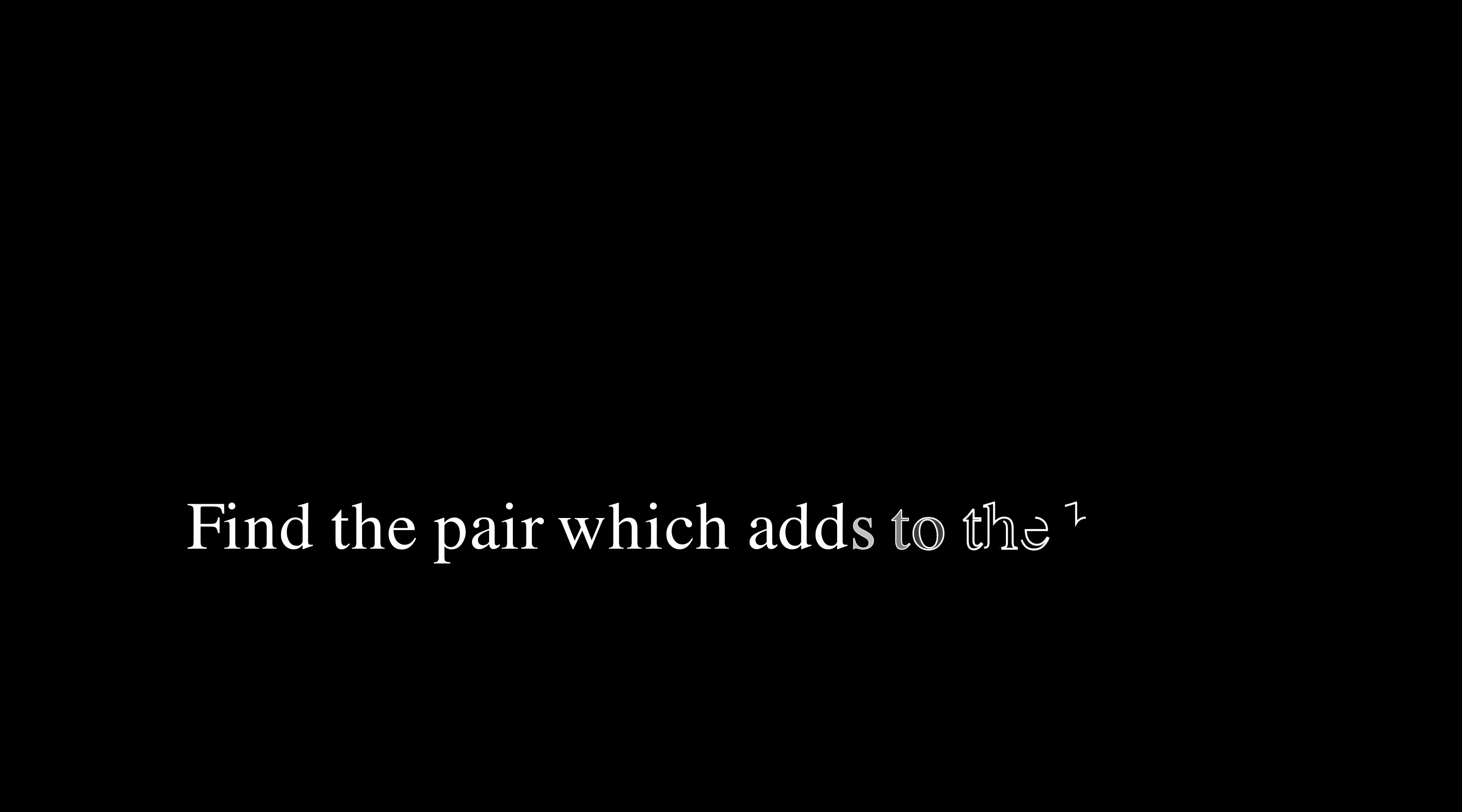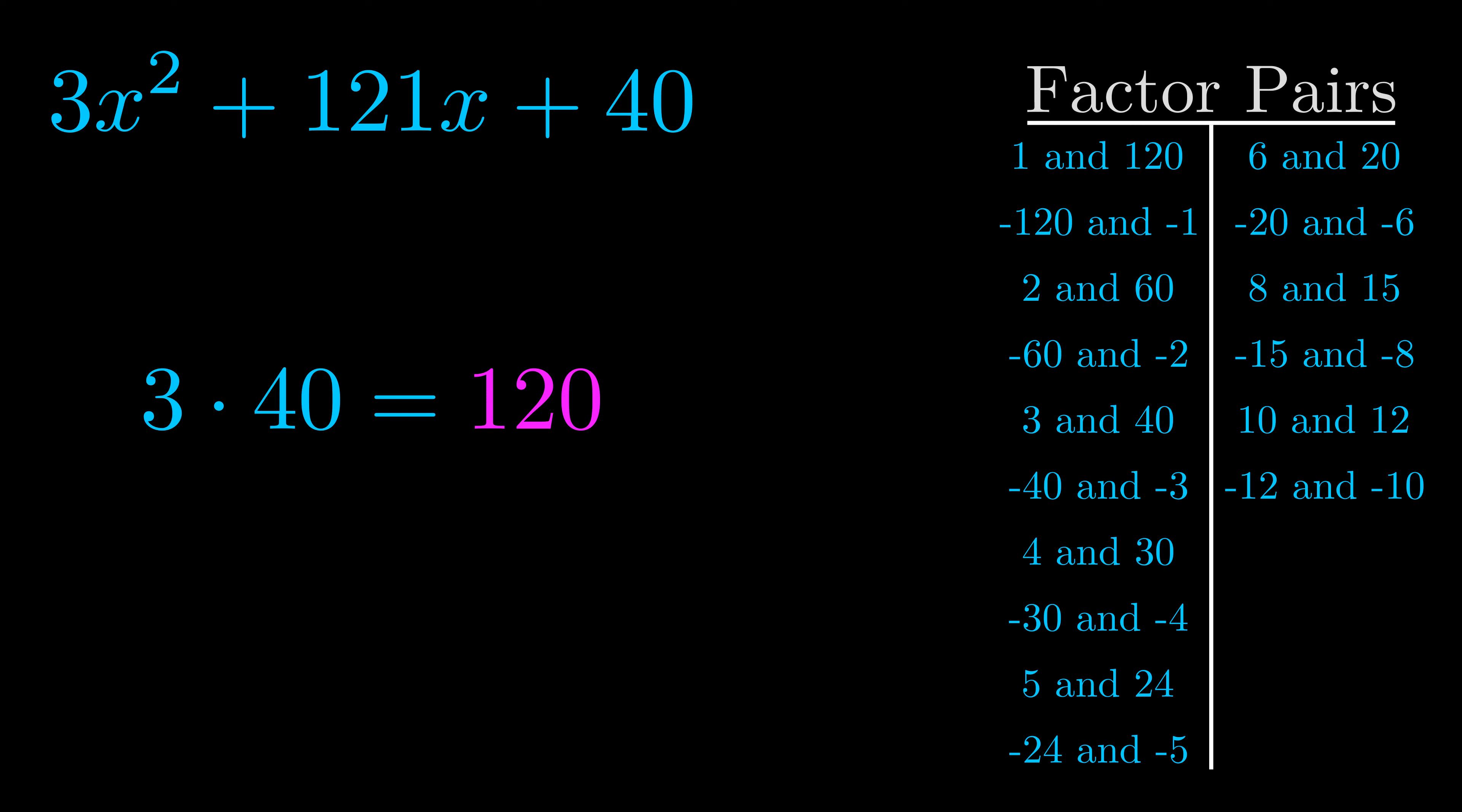The b value is the coefficient on the x term. That's the middle term, the one that we haven't done anything with yet. And really this is the only factor pair that we need.